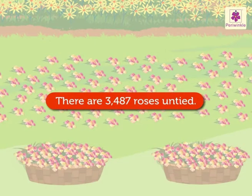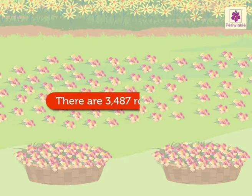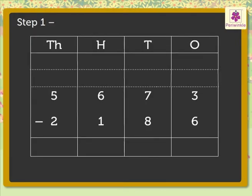Thus, 3,487 roses are untied. Now, let us look at the process of subtraction of these numbers directly. Step 1. Subtract the digits in the ones column.